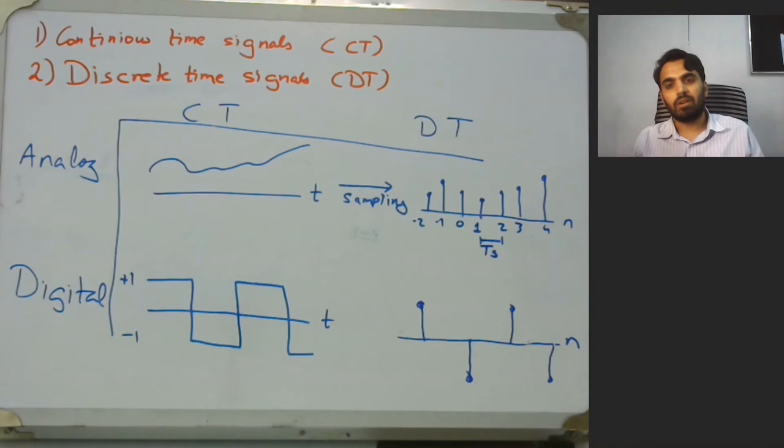Similarly, if you are calculating the temperature at a particular instant of time after certain time intervals, then that would be discrete time analog signal as well.